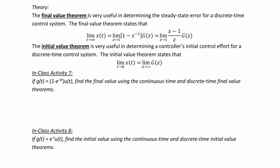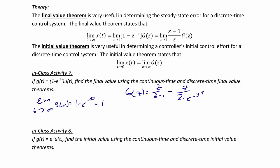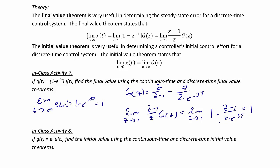In-class activity seven: if G of t equals one minus E to the negative 3T times U of t, find the final value using continuous time and discrete time final value theorems. The limit as T goes to infinity of G of t is one minus E to the negative infinity, which equals one. For G of Z, we have Z over Z minus one, minus Z over Z minus E to the negative 3T. The limit as Z goes to one of one minus Z minus one over Z minus E to the negative 3T also equals one, confirming the results are equivalent.